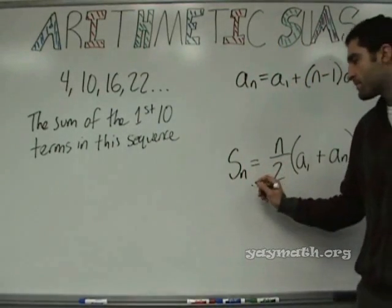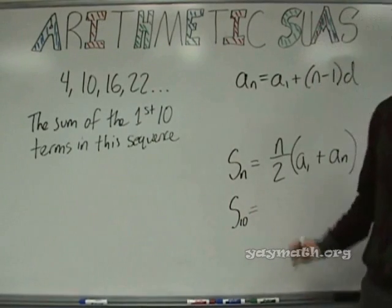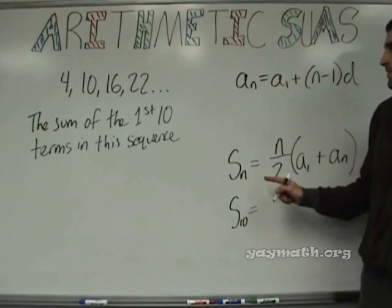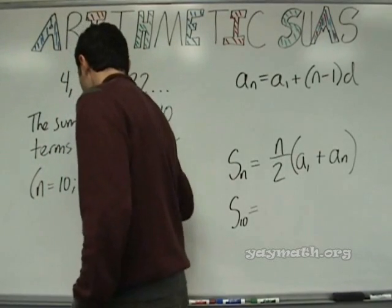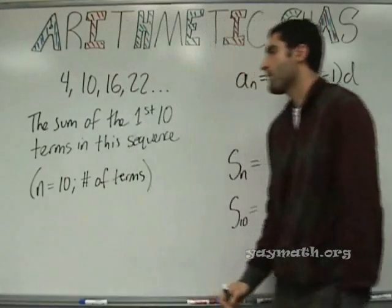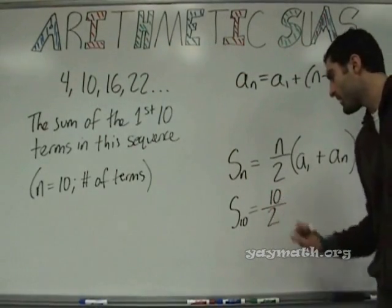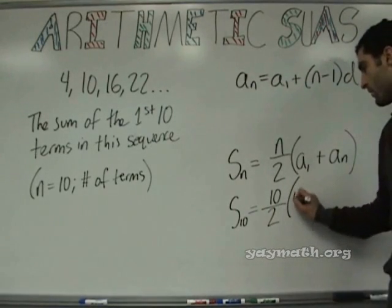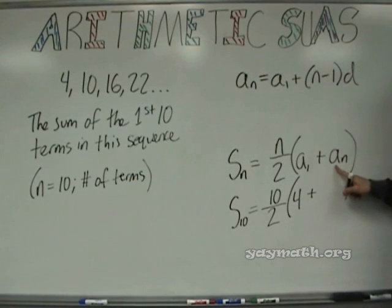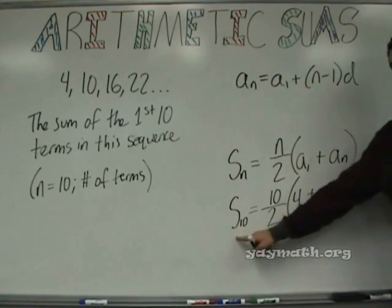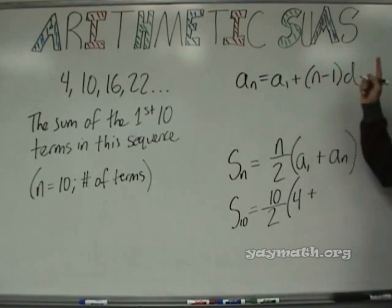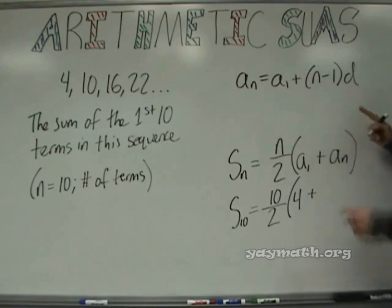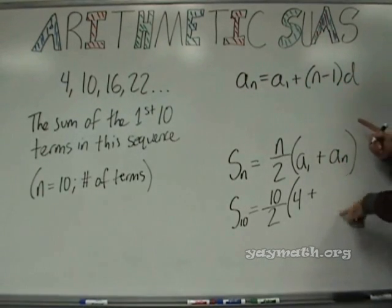So instead of S_N, what should we write? S_10. Why? Because N, the number of terms, equals 10. So we have 10 divided by 2. What is the first term? Four. Plus — what is the 10th term? 58. How'd you get it? You continued it forward? Wait, can we just leave it like that and solve it? No, because then we'd have two unknowns. We need to get the 10th term in the sequence using the other formula. That was the thing people didn't remember to do last year.